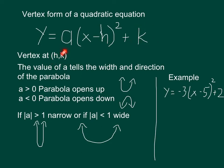Whatever is added at the end is the y-value of the vertex. Because my a is negative, it is going to face down.